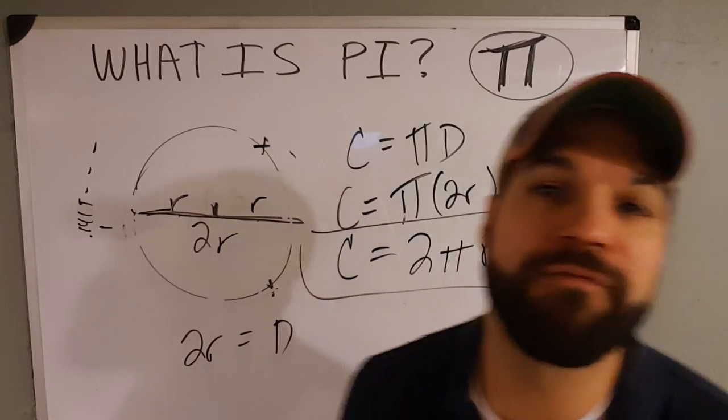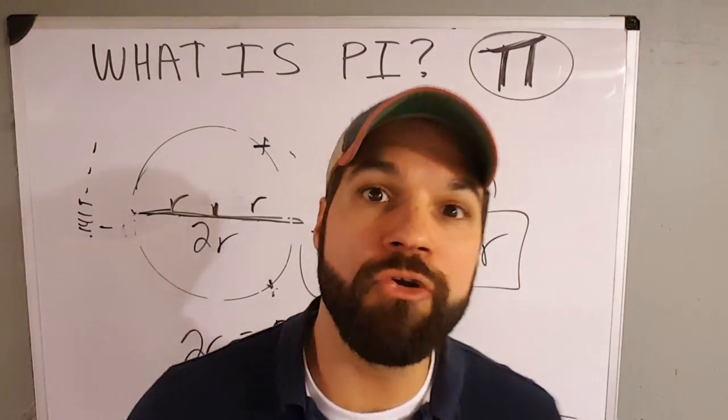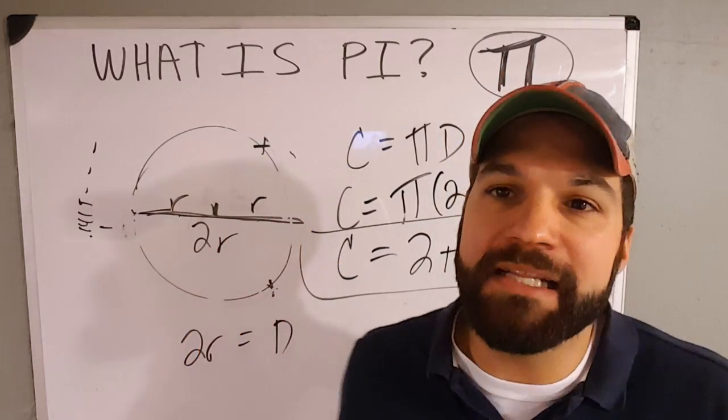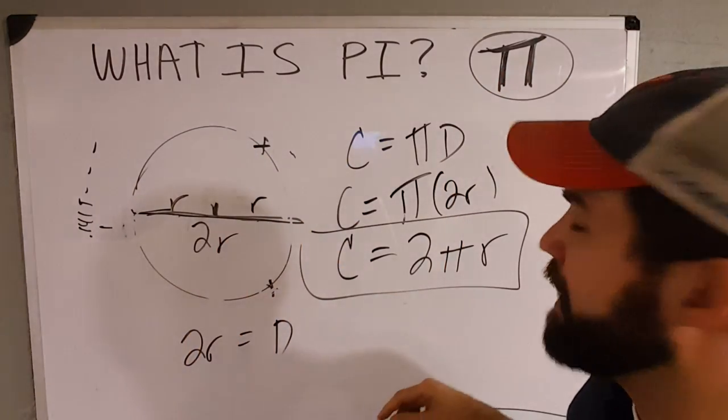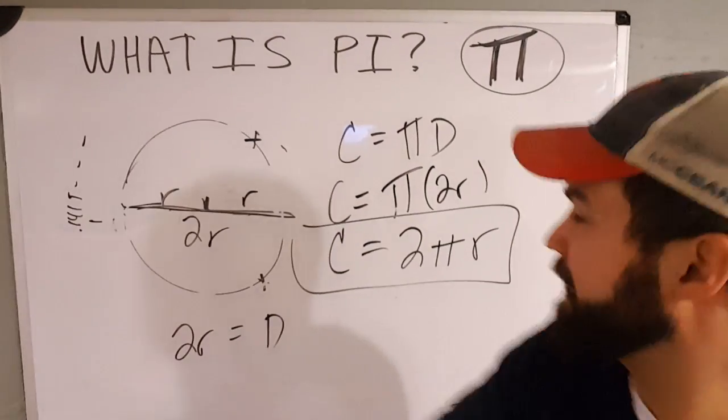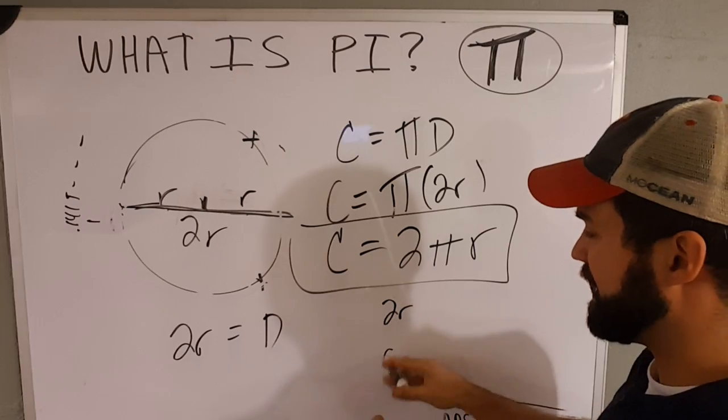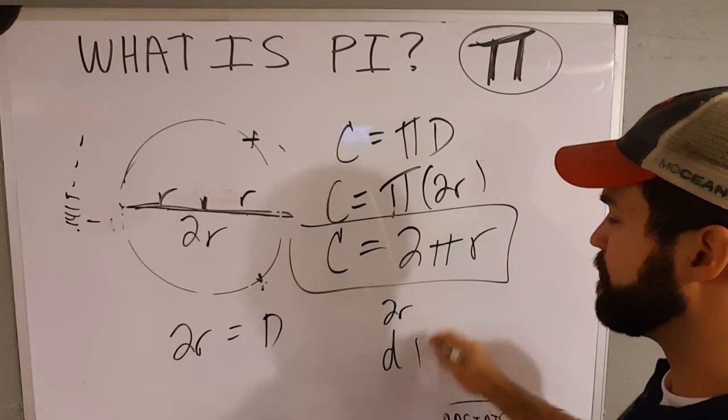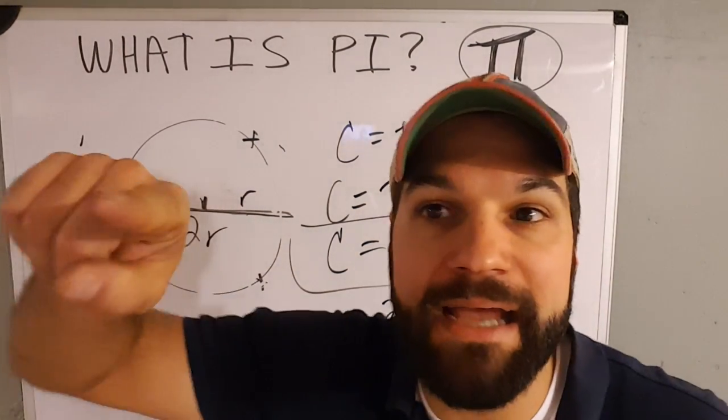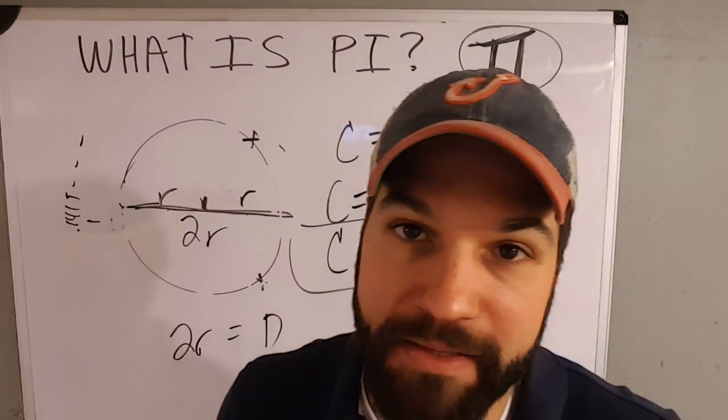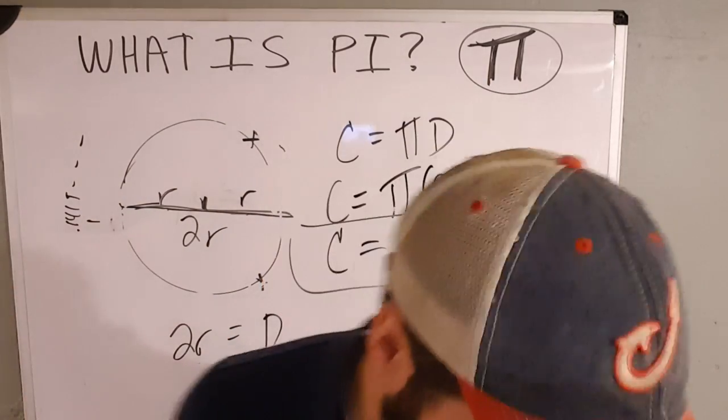And rearranging it simply gives us this 2πr. When you see the formula C = 2πr, pause and say, what is that saying? Okay, C = 2πr. What is that saying? Let me think for a second. Well, these double radiuses, which is a diameter, goes around pi times. Pi diameters wrap around the circle. Okay? That's what pi is.